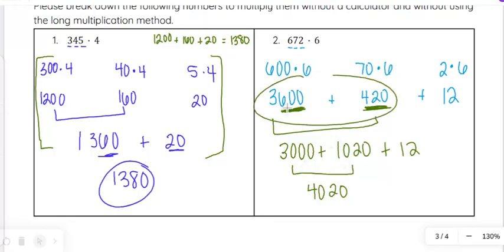You might even jump straight from here to 4,020 in your head. But sometimes it helps to kind of break it up and think, I know I have 3,000. And then I have this 600 and this 420 together, which is 1,020. And that's where I get 4,020. And then we add the 12 to that. And then 20 plus 12 is 32. So 4,032.